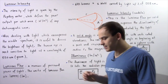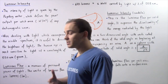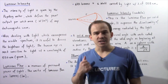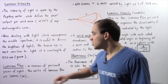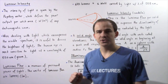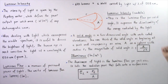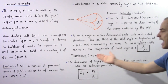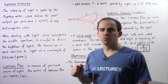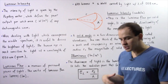This fact will become important when we define luminous flux. Three important quantities exist that help us describe the brightness of light: luminous flux, luminous intensity, and illuminance. Let's begin with luminous flux.